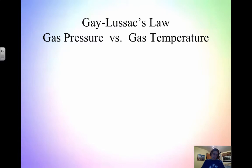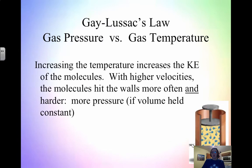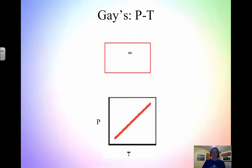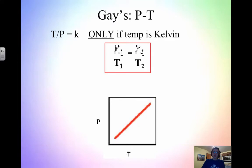The next one is Gay-Lussac's Law — pressure versus temperature. With Gay-Lussac's Law, increasing the temperature increases the kinetic energy of the molecules. Whenever you increase temperature, you increase motion and kinetic energy. With higher velocities, the particles hit more often and harder, which means pressure is higher. We have to assume volume is held constant. Qualitatively, as one goes up, the other goes up. Temperature must be in Kelvin — all gas laws need Kelvin. So P1/T1 = P2/T2. This is a linear graph because it is a direct relationship.